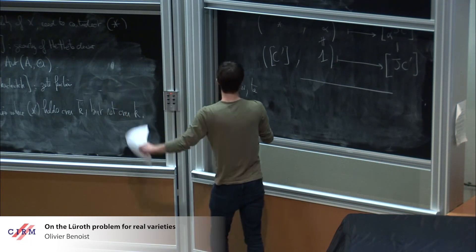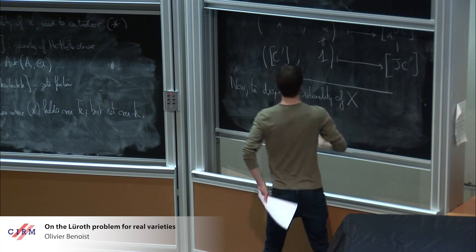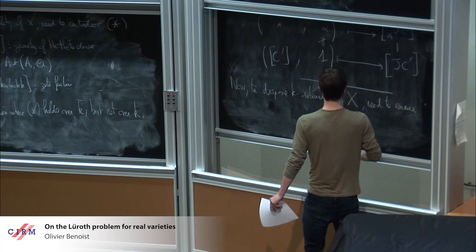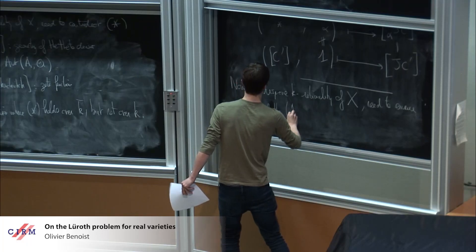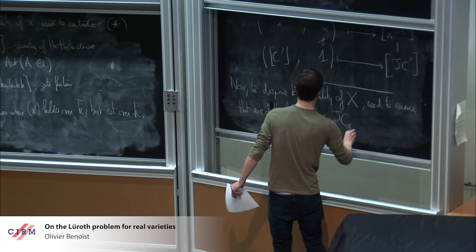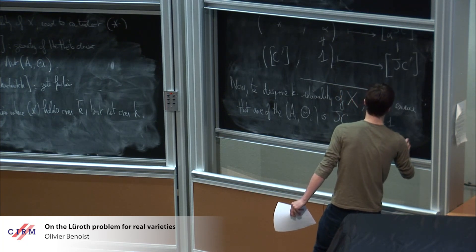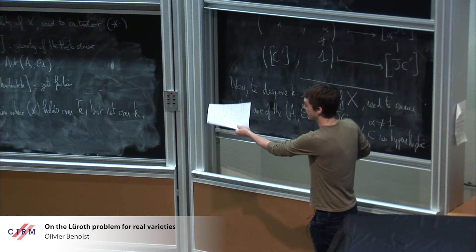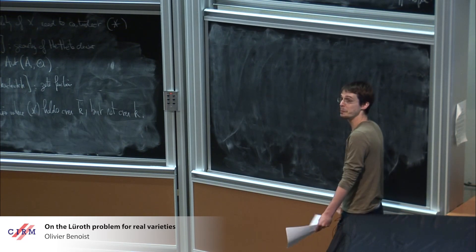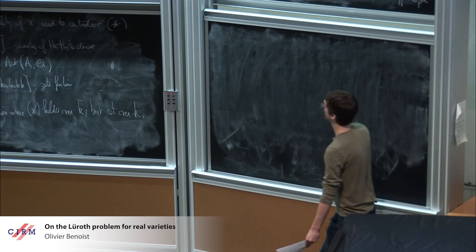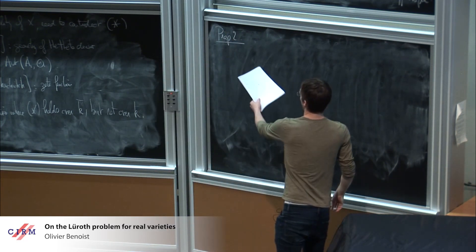So we have a criterion for non-k-rationality: we just need to find in the decomposition as a product of indecomposable PPAVs one factor that is a non-trivial twist of the Jacobian of a non-hyperelliptic curve. To disprove k-rationality of X, it suffices to ensure that one of the factors (Aᵢ, θᵢ) is such a twist with α non-trivial and C non-hyperelliptic. It remains to construct examples where these twisted Jacobians appear in the intermediate Jacobian of a threefold — this is the goal of Proposition 2.